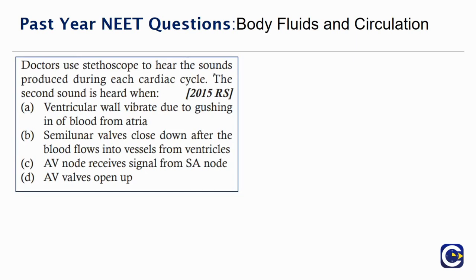Doctors use stethoscope to hear the sounds produced during each cardiac cycle. The second sound is heard when: ventricular valves vibrate due to gushing in of blood from atria, semilunar valves close down after blood flows into the vessels from ventricles, AV node receives signals from SA node, or AV valves open up.